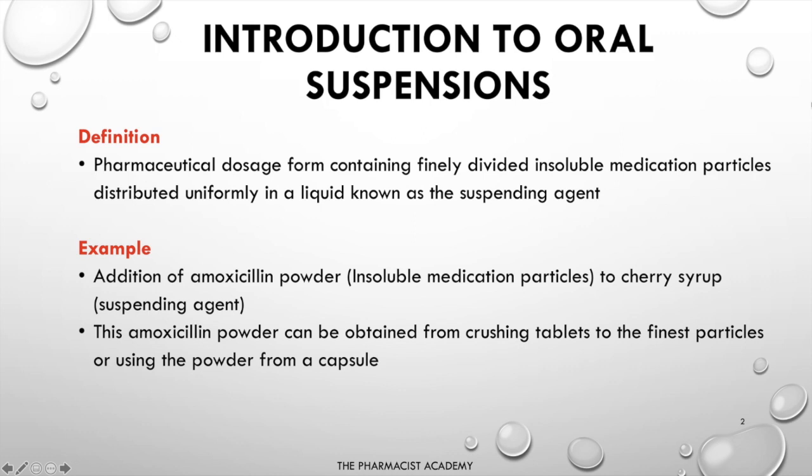This amoxicillin powder can be obtained from crushing tablets to the finest particles or using the powder from a capsule. It doesn't matter how you get this powder — just make sure that the powder is in its finely divided, finest form before you actually add it to the suspending agent.